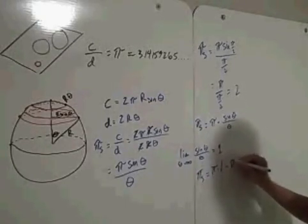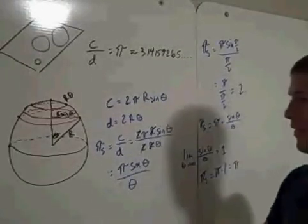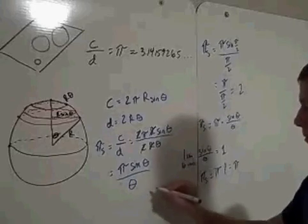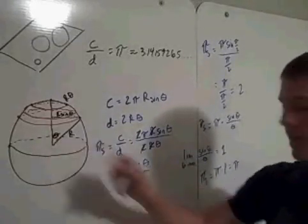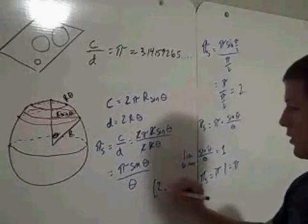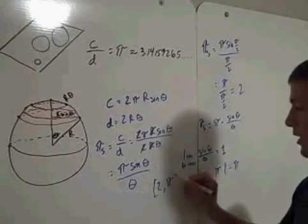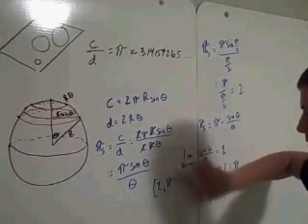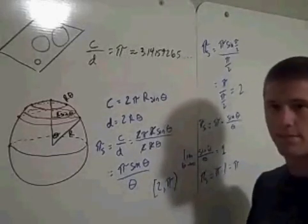So what we've found is that the value of spherical pi depends on the angle theta, and it ranges between 2 and Euclidean pi — with 2 being the value at the equator and pi being the limiting value as theta approaches 0.